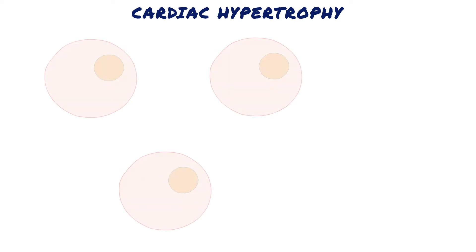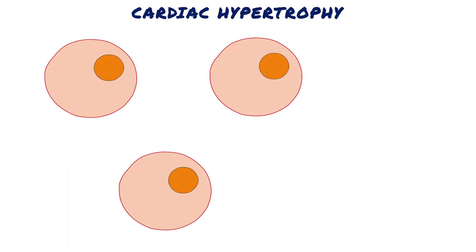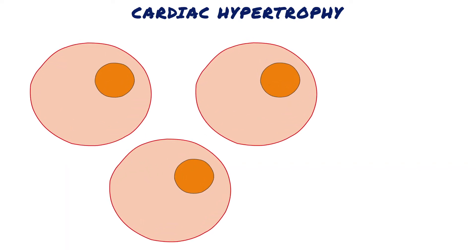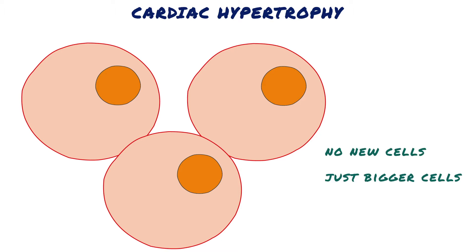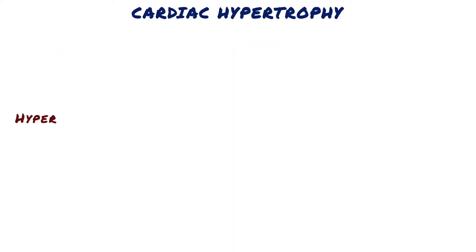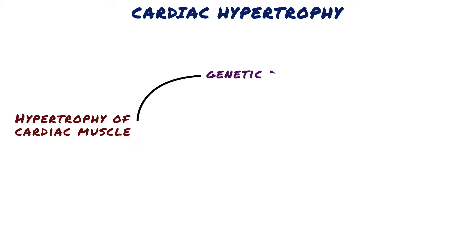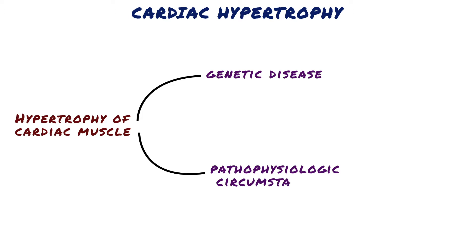Cardiac hypertrophy is an increase in the size of cells resulting in an increase in the size of an organ. Stated another way, in pure hypertrophy there are no new cells — just bigger cells containing increased amounts of structural proteins and organelles. Hypertrophy of cardiac muscle can be caused by genetic disease or by certain pathophysiologic circumstances.